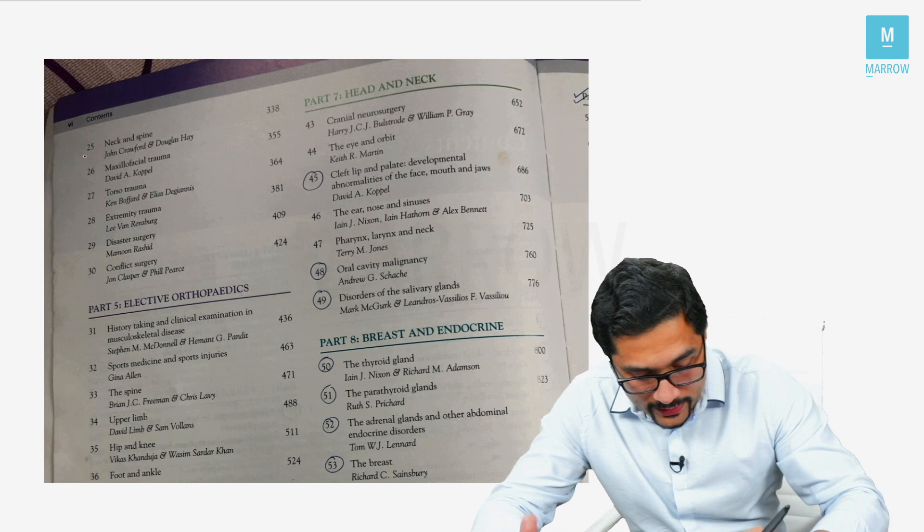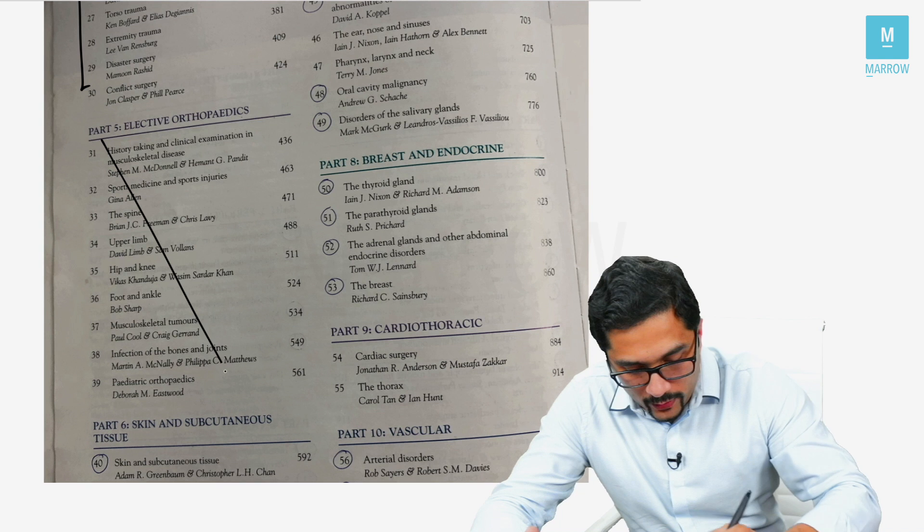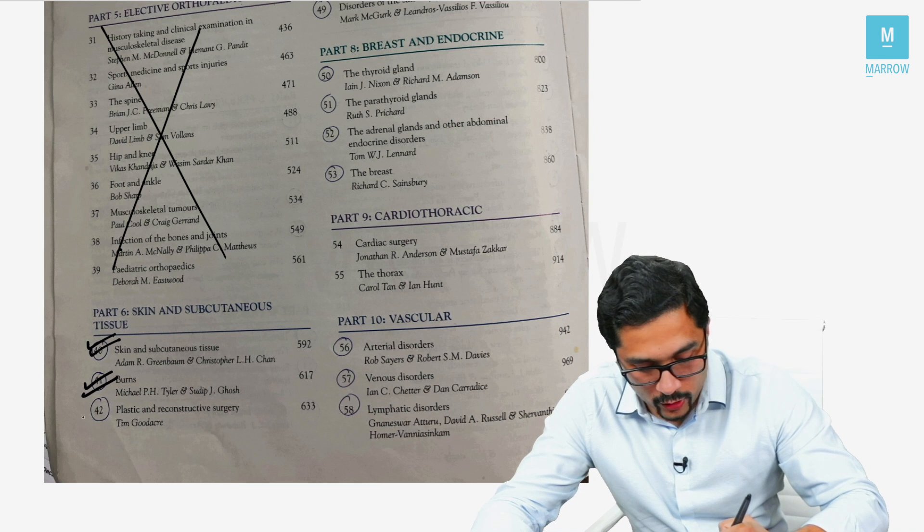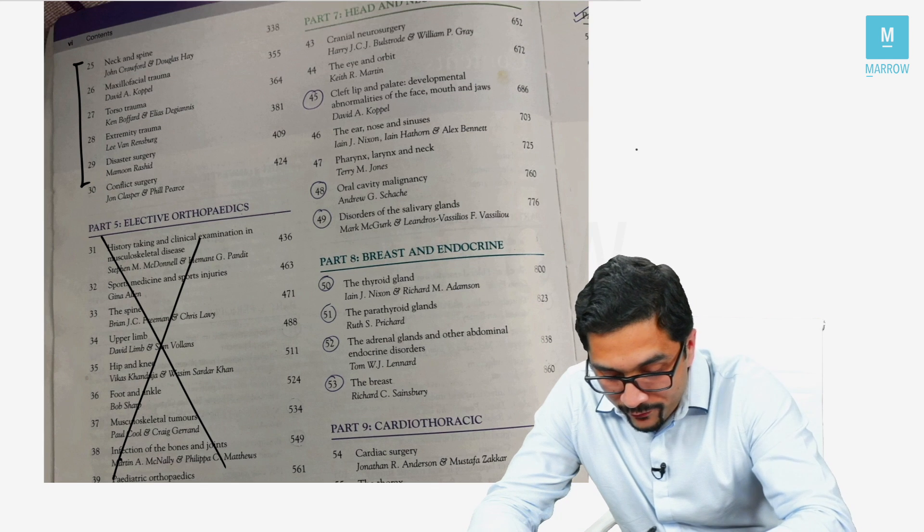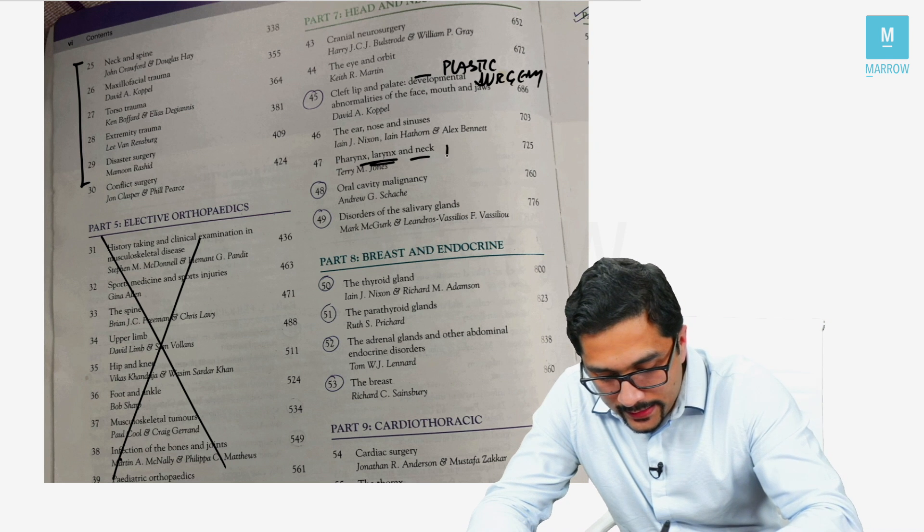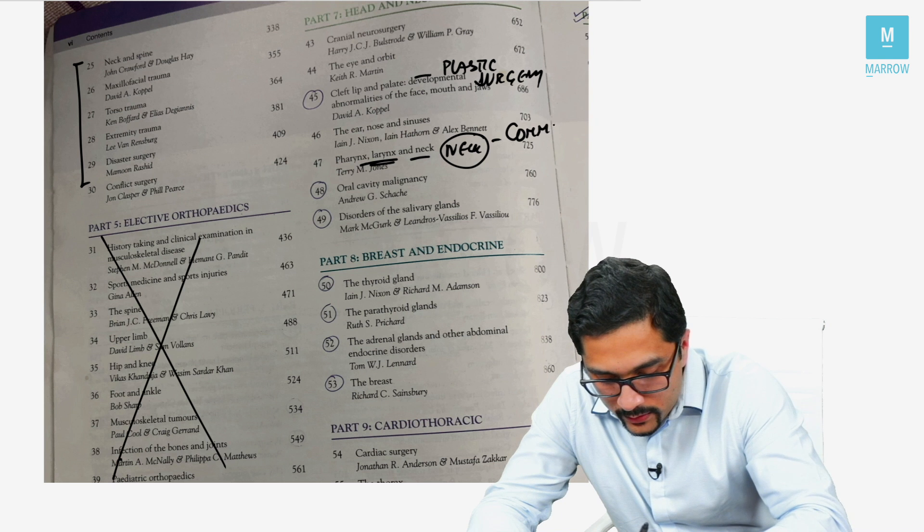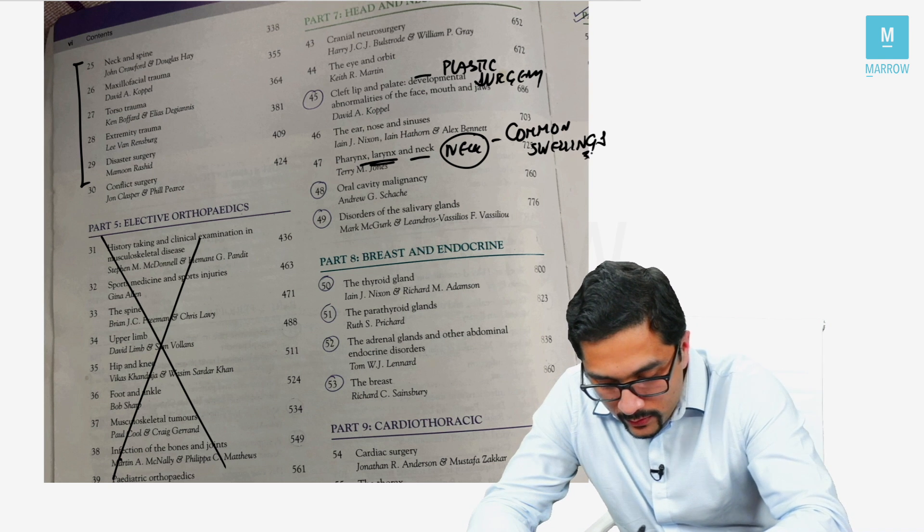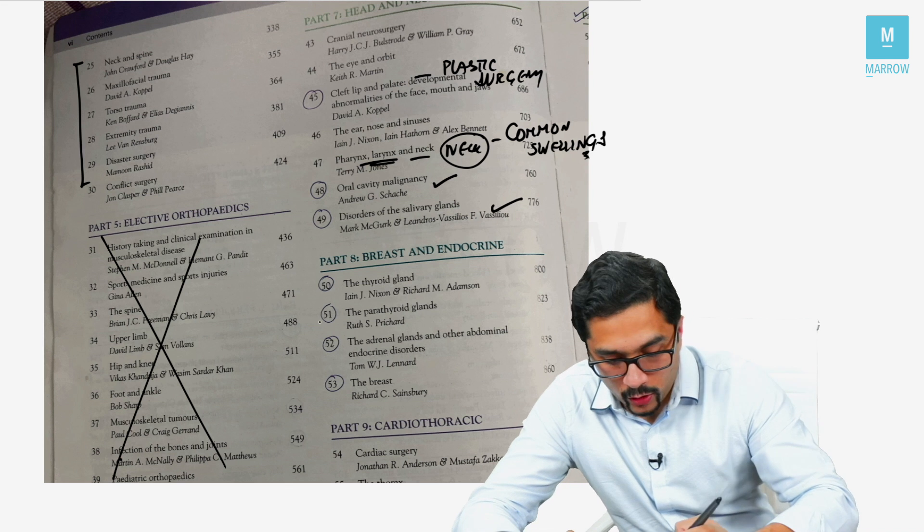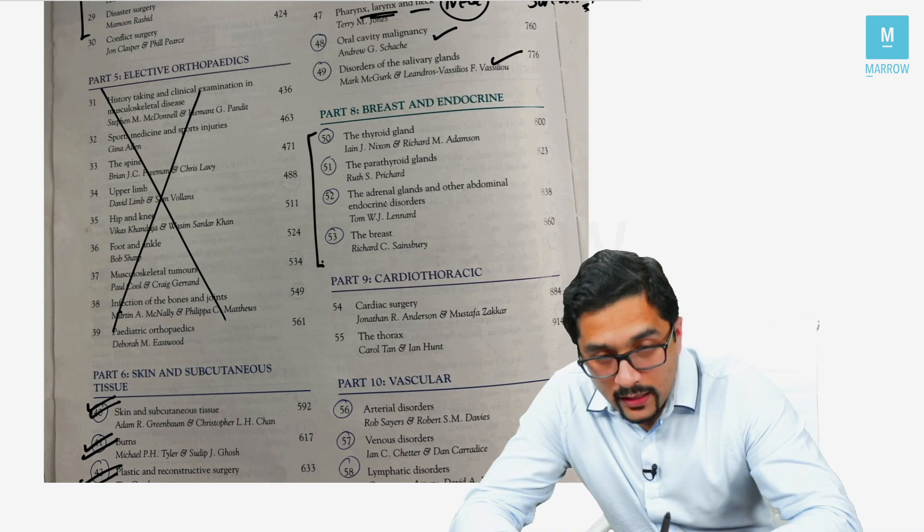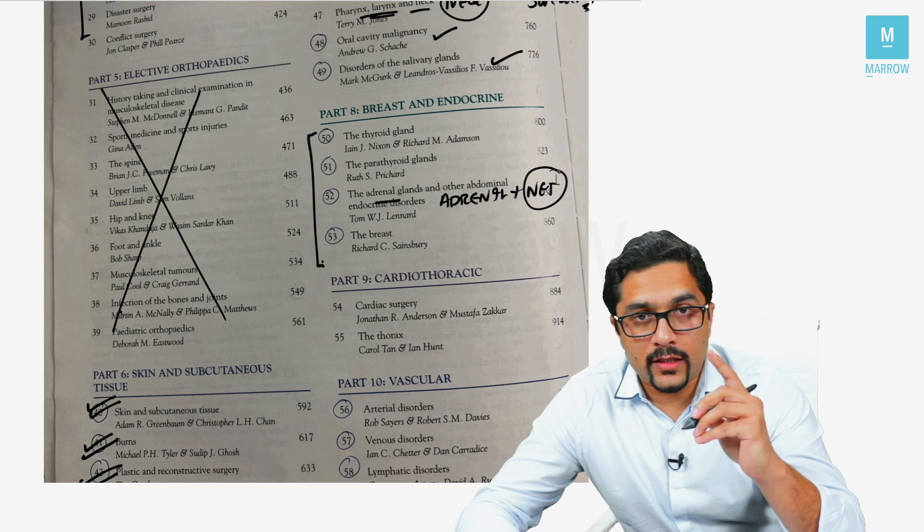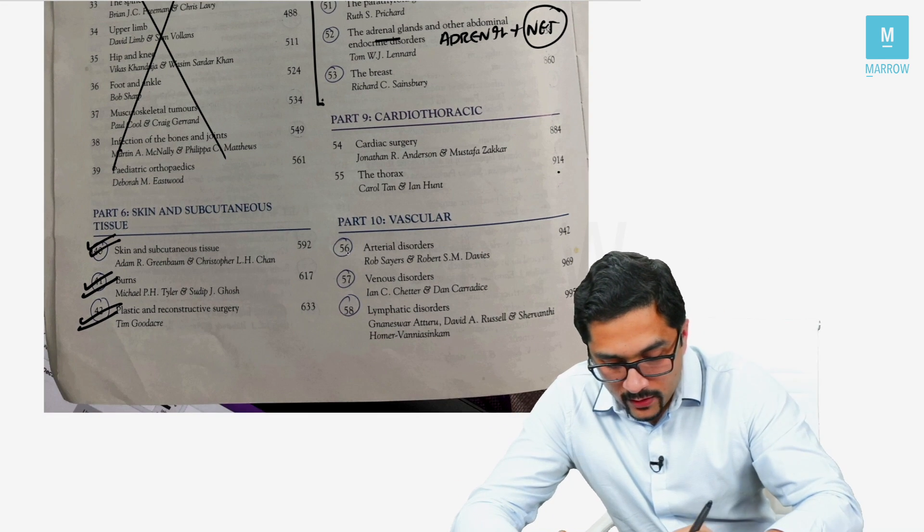All the trauma chapters I have covered separately as separate modules. Orthopedics has been covered beautifully by Dr. Abbas. Skin and subcutaneous tissue is a separate module. Burns is a separate module. Plastic surgery is a separate module. Cleft lip and cleft palate is with plastic surgery. Pharynx, larynx, and neck: there are neck swellings which are there in the common swellings module. Oral cavity is a separate module. Salivary glands is a separate module. Thyroid, parathyroid, adrenal, breast: separate modules. I want to highlight that in adrenal, I have also covered neuroendocrine tumors, that is carcinoid tumors.